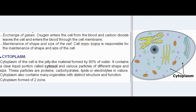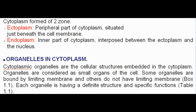Cytoplasm of the cell is a jelly-like material formed by 80% water. It contains a clear liquid portion called cytosol and various particles of different shape and size — proteins, carbohydrates, lipids, or electrolytes. Cytoplasm also contains many organelles with distinct structure and function. It is formed of two zones: ectoplasm, the peripheral part situated just beneath the cell membrane, and endoplasm, the inner part interposed between the ectoplasm and the nucleus.